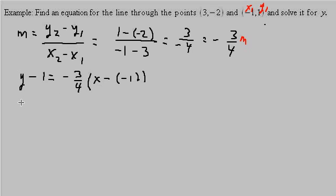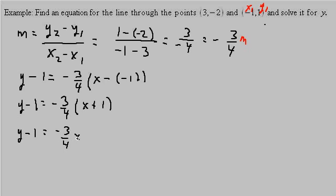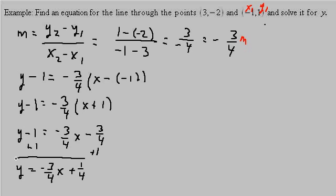So now I have y minus 1 equals negative 3 fourths times x plus 1. I add 1 to both sides, and I get y equals negative 3 fourths x plus 1 fourth. And there's my equation of my line.